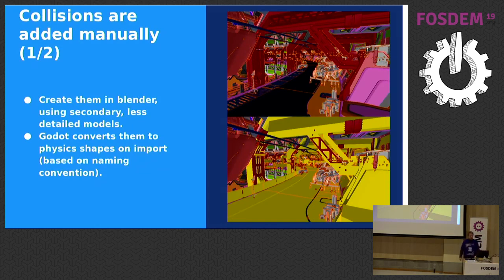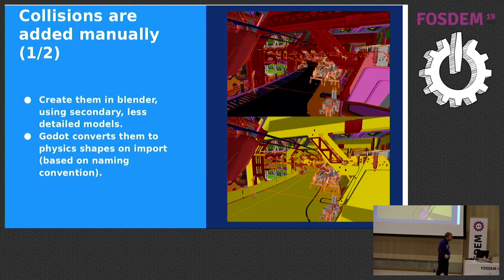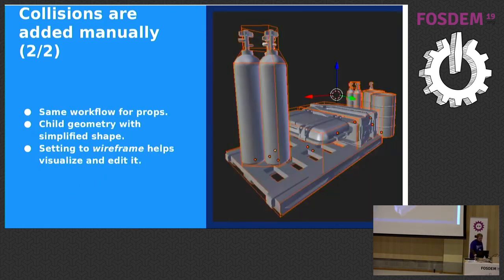Collisions are also added manually in Blender. In Godot, you add '-col' to the name of an object and when imported, a collision is generated for it. You can use '-col' so the collision has the same shape as the object. But sometimes the model is really complex and triangle mesh collisions are slow. It's very common to make a simplified version of the model just for collision. In Blender you add '-colonly,' which means it's just for collision with no art — when imported, the art is deleted.